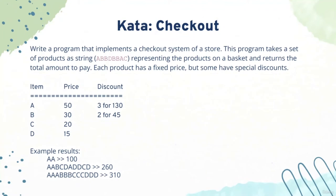In this kata, we need to write a program to implement the checkout system of a store. This program will receive a string — for example, A, B, B, D, B, B, A, C — that represents each one of the items or products in the basket, and it will return the total amount to pay.